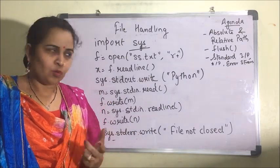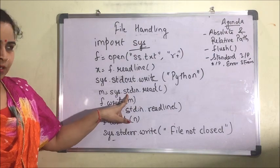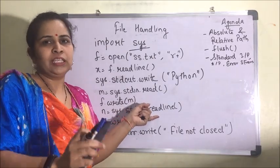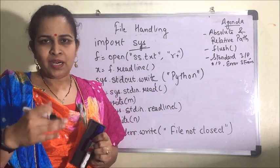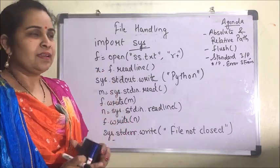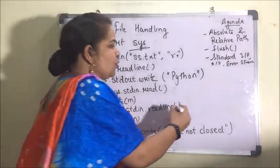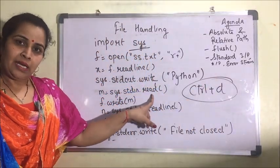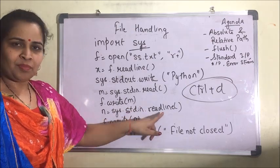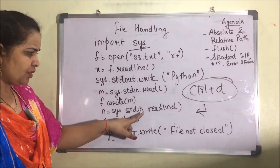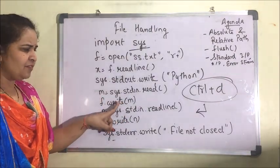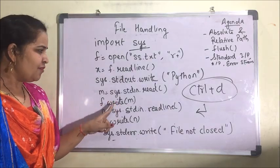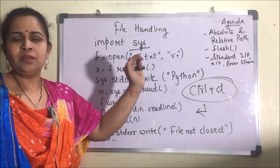The difference between the two is: readline will read one line as input from the user through the keyboard, while read will ask for multiple lines as input. When you want to exit from the read command, press Ctrl+D. When you want to exit from readline, press the Enter key. Whatever is read can then be written into a file using the file object.